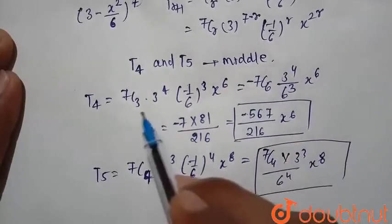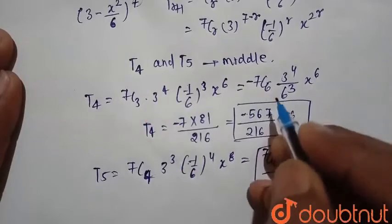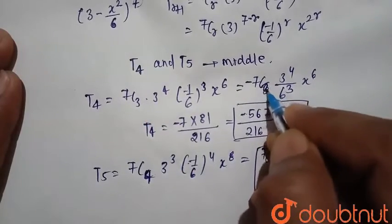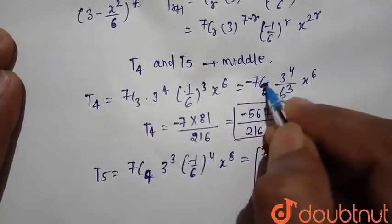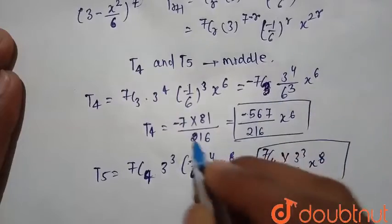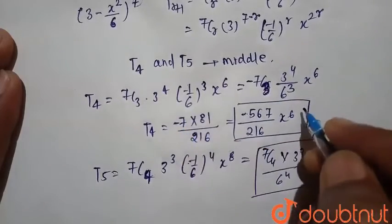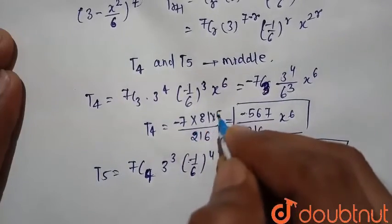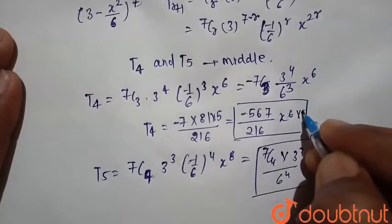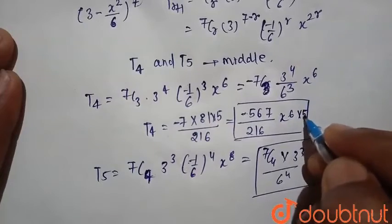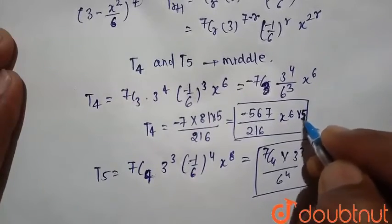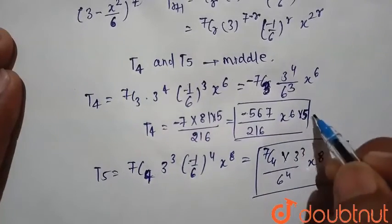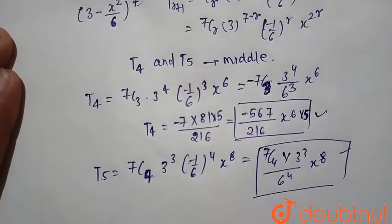Sorry, here the coefficient should be 7C3, not 7C4 — that was a printing mistake. So 7C3 equals 35. Multiplying by 5 here as well. These are the middle terms: T4 and T5 are the middle terms.